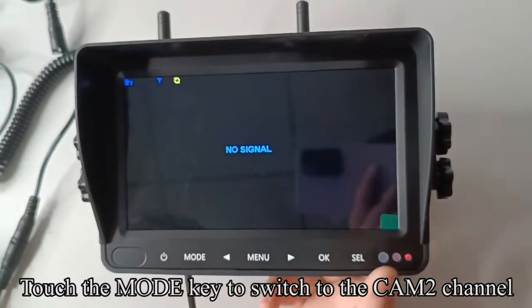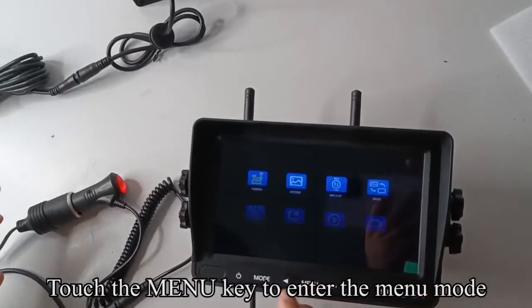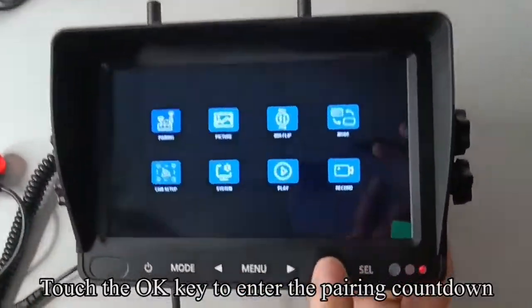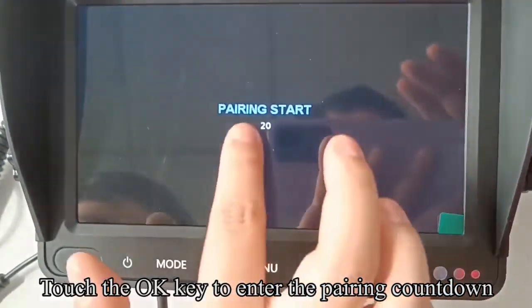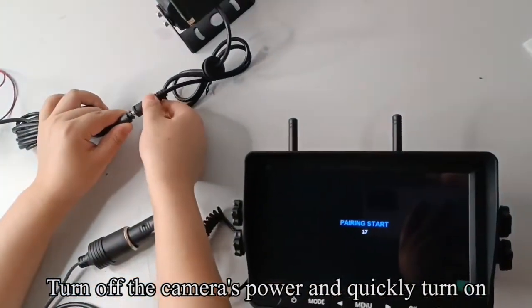Touch the mode key to switch to the CAM2 channel. Touch the menu key to enter the menu mode. Touch the OK key to enter the pairing countdown. Turn off the camera's power and quickly turn on.